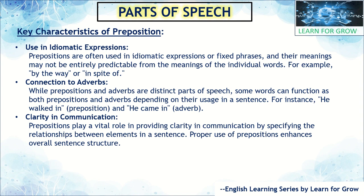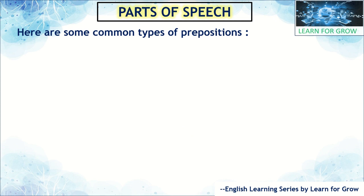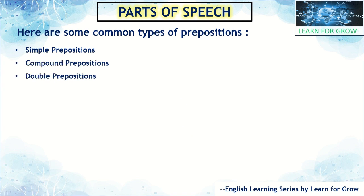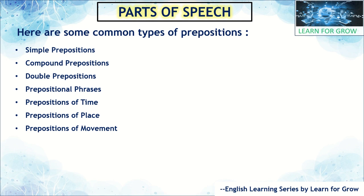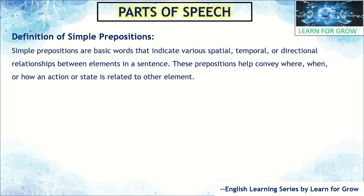These are the key characteristics of prepositions. Now let's see what types of prepositions we have. The types are: simple preposition, compound preposition, double preposition, prepositional phrases, preposition of time, preposition of place, and preposition of movement. Based on the formation of the sentence, we have categorized them. First, let's see the definition of simple preposition.